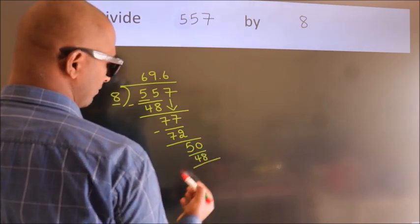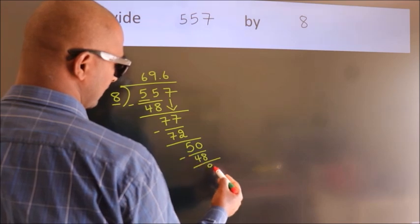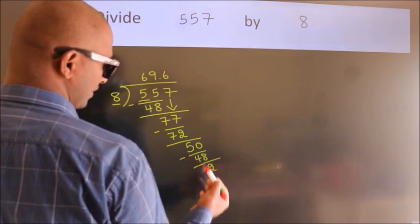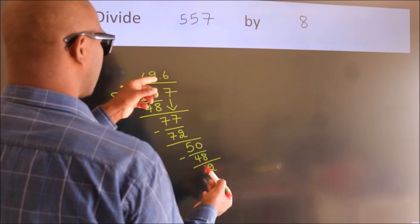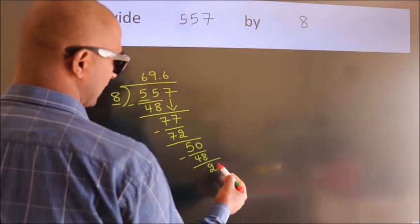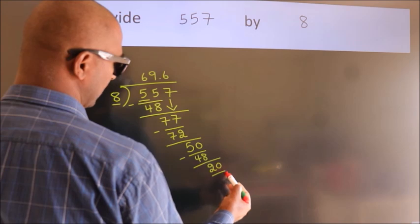Now we subtract. We get 2. After this, we already have the decimal, so directly take 0. So 20.